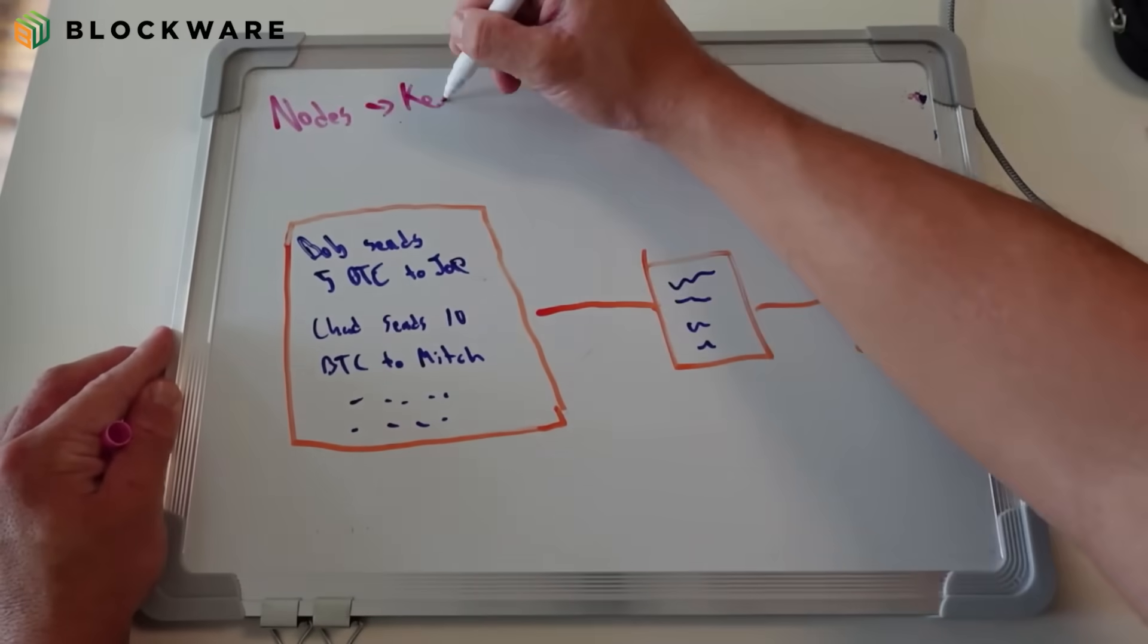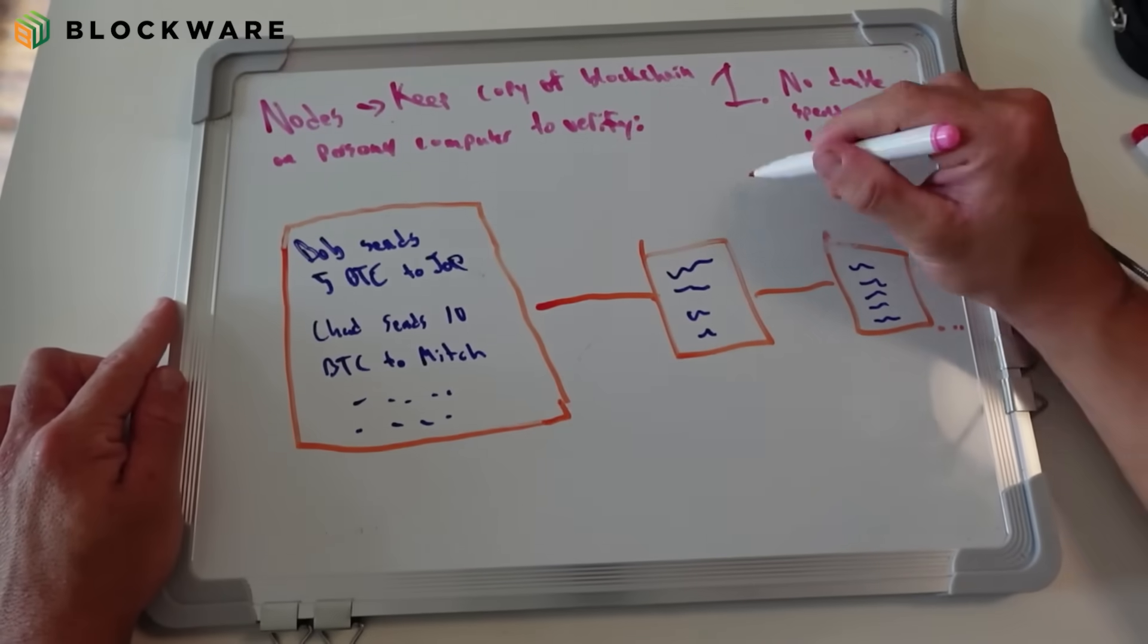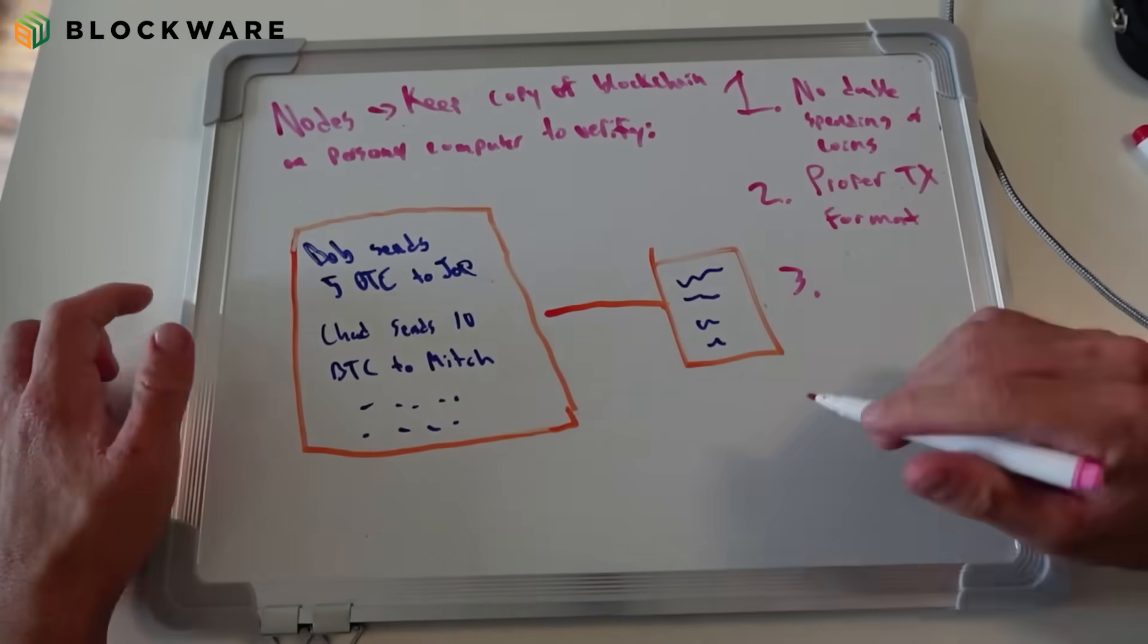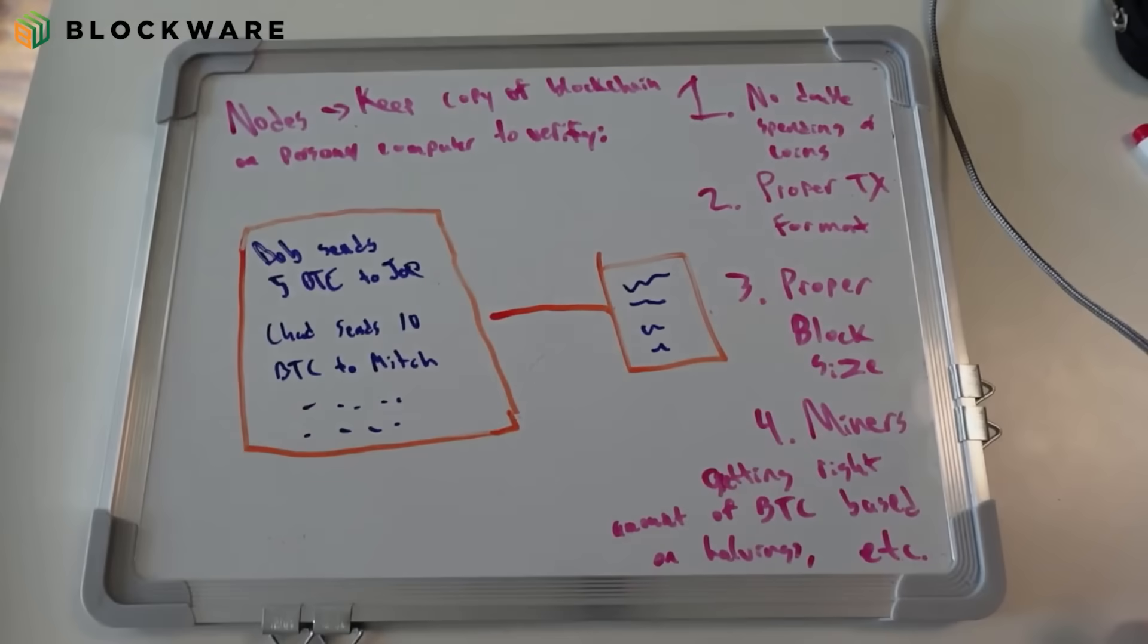Nodes are distributed computers that validate and relay transactions across the Bitcoin network. Each node operates on a set of rules known as the Bitcoin protocol, which ensures that all transactions and blocks conform to the consensus rules. These rules include checks for double spending, block sizes, improper transaction formats, etc. Nodes are crucial for maintaining the decentralized nature of Bitcoin as they independently verify each transaction and block before it is accepted into the blockchain. By running a node, participants contribute to the security of the network, helping to keep it resistant to fraud and manipulation.